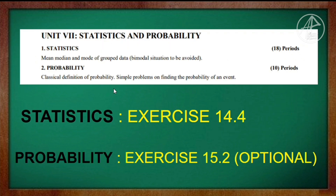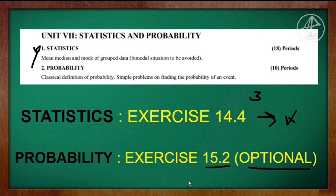Unit 7 is the last unit — Statistics and Probability. Chapter 6 covers Statistics and Probability. For Statistics, Exercise 14.4 is deleted, so a total of 3 exercises are deleted. For Probability, Exercise 15.2 is optional, so it can be deleted.